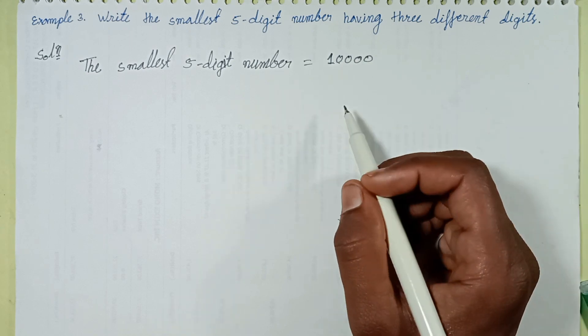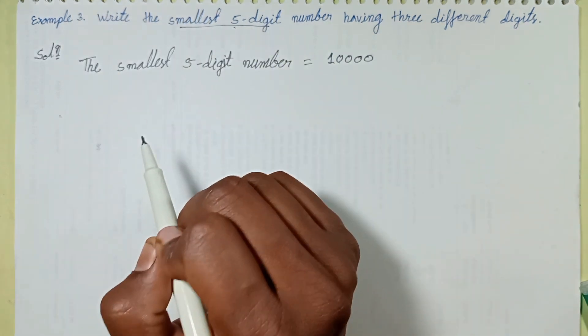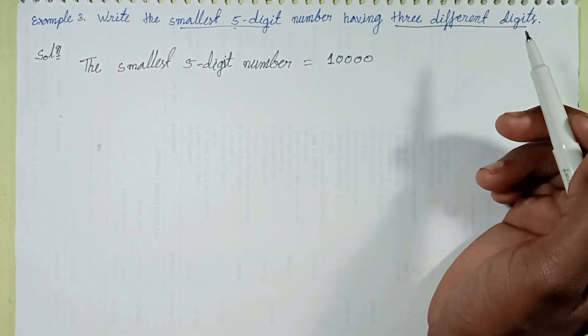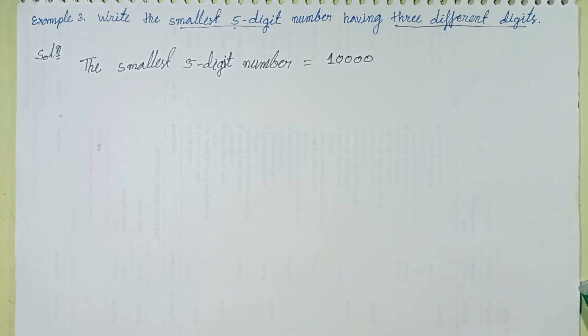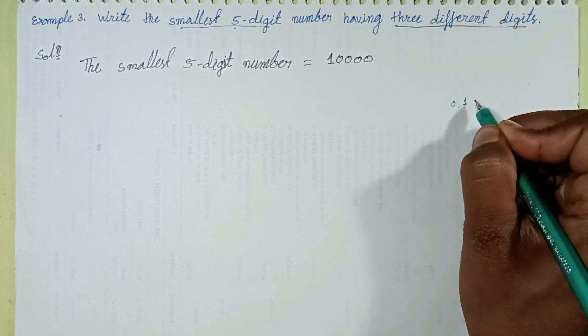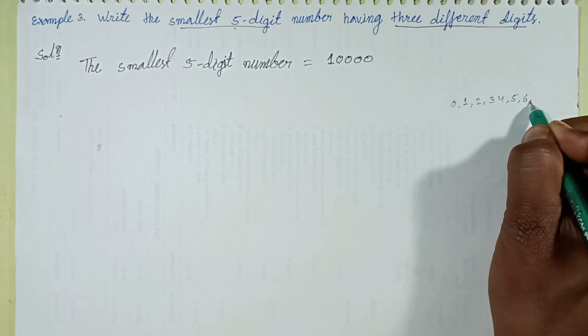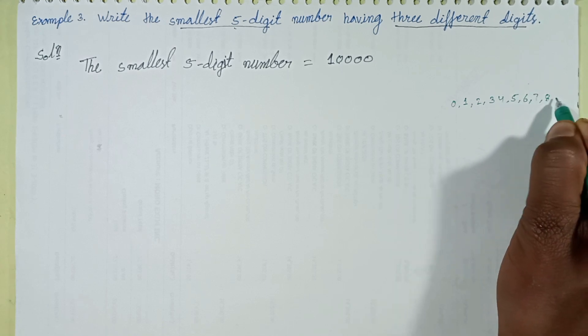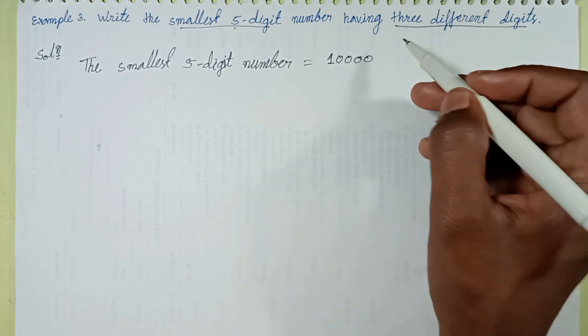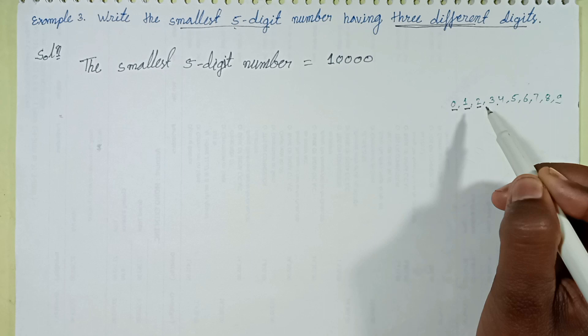Now for the smallest five-digit number having three different digits. How many digits are there total? Counting: 0, 1, 2, 3, 4, 5, 6, 7, 8, and 9. Total 10 different digits available. We need 3 different digits: 1, 2, 3.